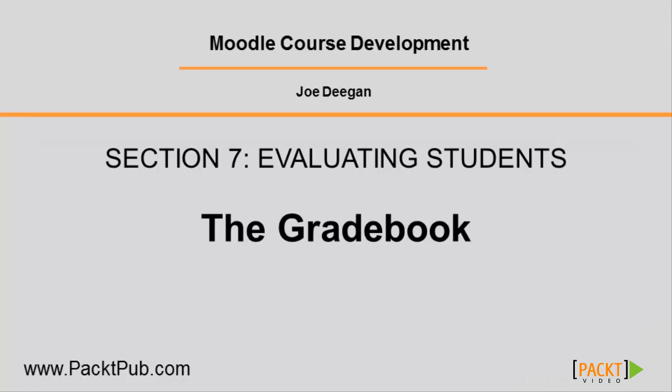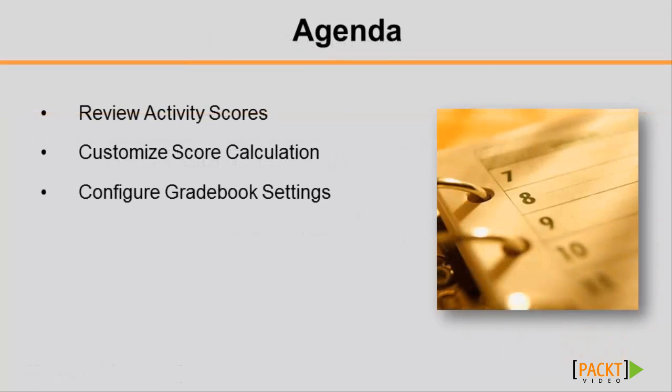Hello and welcome back to another video in the Moodle course development series. I'm Joe Deegan, and in this video you'll learn how to evaluate students and track progress using the gradebook. In the last section, you learned how to make your courses more social with interactive social activities. Now you're going to learn how to check your students' scores on course activities and how to customize grading settings for your course. So let's head over to a course site where we can take a look at an example of a gradebook.